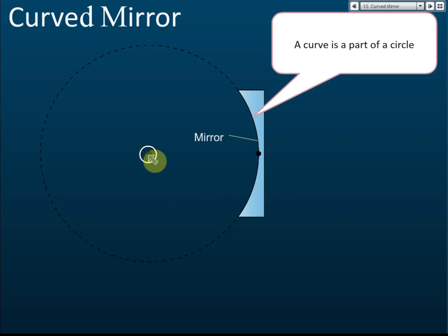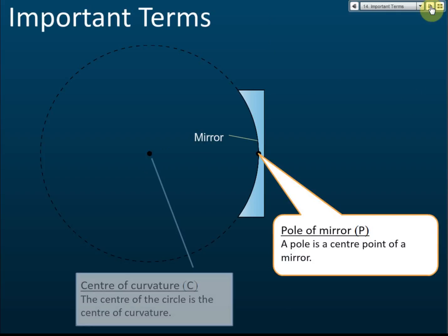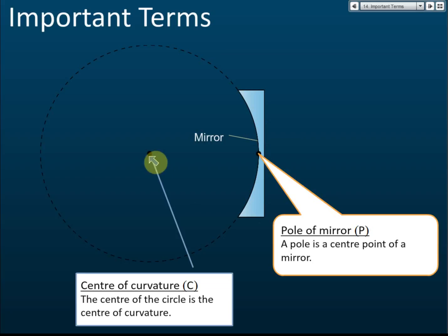Every circle has a center. If we cut this curve out from the circle, that center still acts as a center, but it is no longer called the center of the circle — it is now called the center of curvature, denoted by the symbol C.